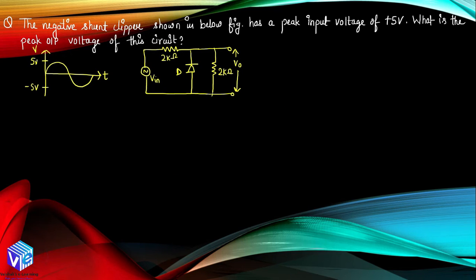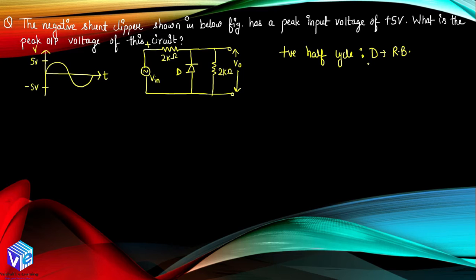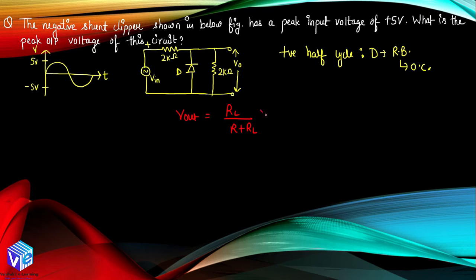The next question: a negative shunt clipper has a peak input voltage of 5 volt. Find the peak output voltage. During the positive half cycle of the input AC signal, the diode is reverse biased — the positive signal connects to the N-side of the diode. When the diode is reverse biased, it is an open circuit and the output voltage is calculated by the voltage division law: V_output equals R_L over (R + R_L) into V, which gives 2 over (2 + 2) into 5 = 2.5 volt.